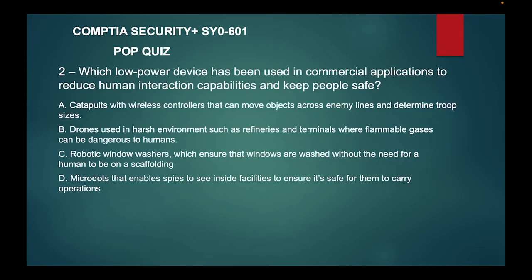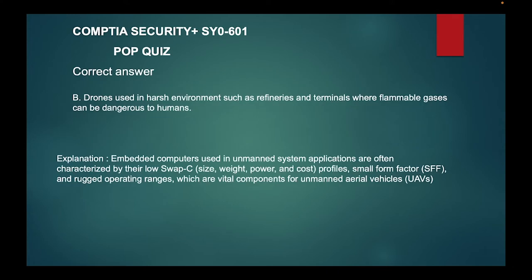Question two: which low power device has been used in commercial applications to reduce human interaction and keep people safe? A) Catapults with wireless controllers that can move objects across enemy lines and determine troop sizes, B) drones used in harsh environments such as refineries and terminals where flammable gases can be dangerous to humans, C) robotic window washers which ensure windows are washed without the need for a human on scaffolding, or D) micro dots that enable personnel to see inside facilities to ensure it's safe to carry out operations. The correct answer is B — drones used in harsh environments such as refineries and terminals where flammable gases can be dangerous to humans.